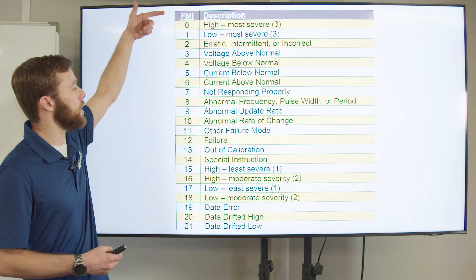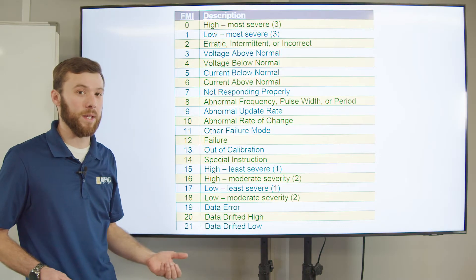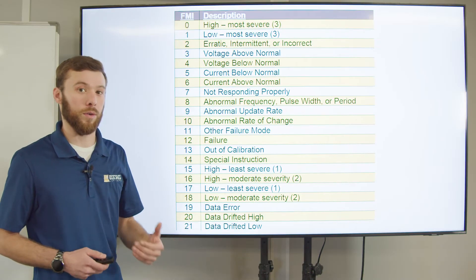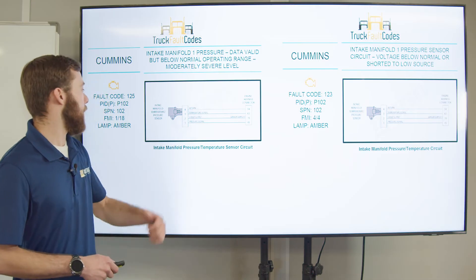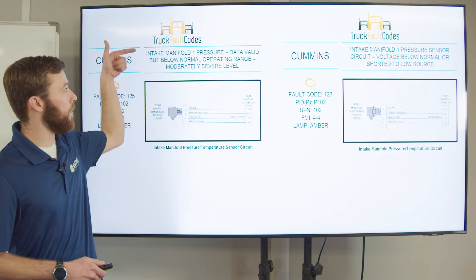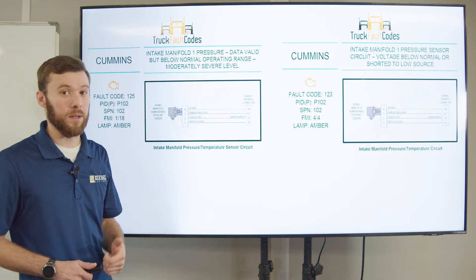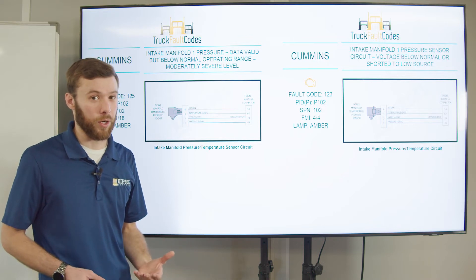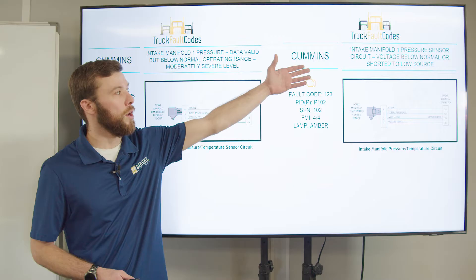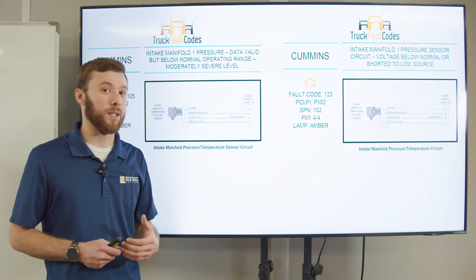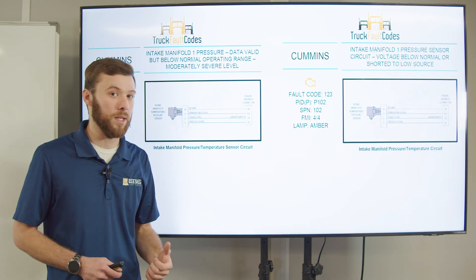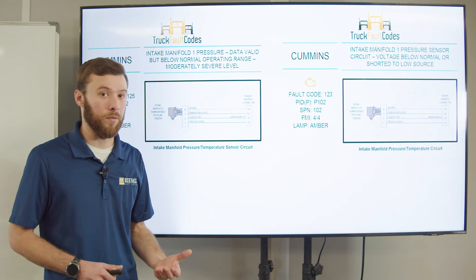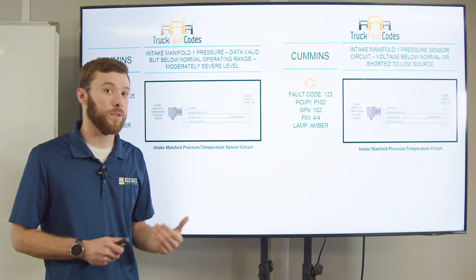Looking at this, we see a lot of different FMIs on here, and you may see more. But looking through this list we can determine whether they're electrical faults or mechanical faults. For example, on this list we have intake manifold pressure — 'data valid but below normal operating range' — so this may tell us that we actually have low boost pressure. In this other case, we have 'voltage below,' which tells us the signal coming back from that sensor to the ECM is below the normal operating range. Normally, if it's a 5-volt reference, we're looking for a range between half a volt to four and a half volts, though that can change.